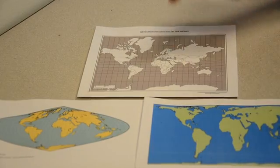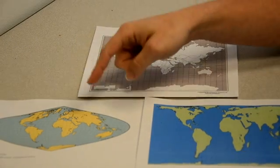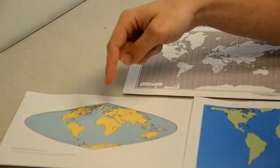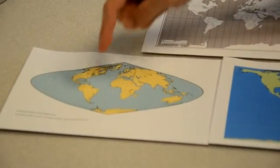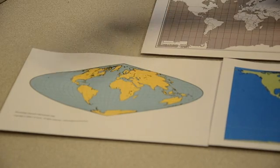Africa is 11 times the size of Greenland. In the Sanson-Flamsteed map, which is what the census uses, South America and Africa are pretty accurately represented, but the poles are very distorted.